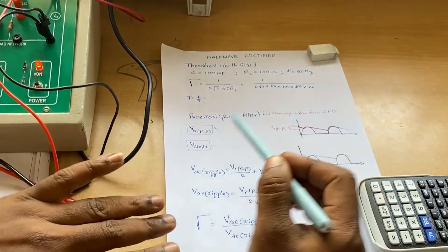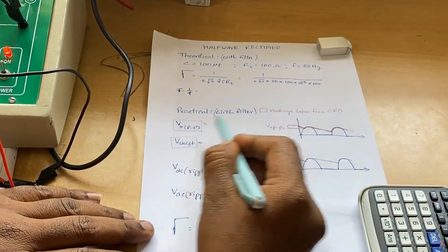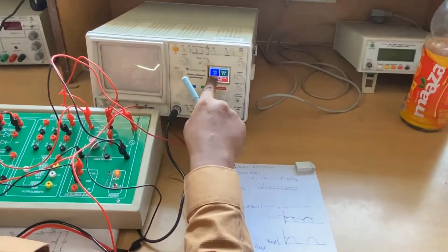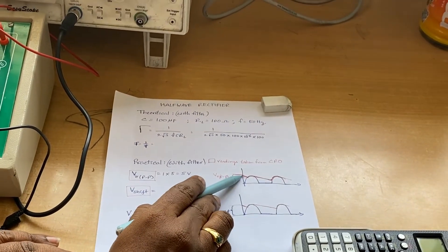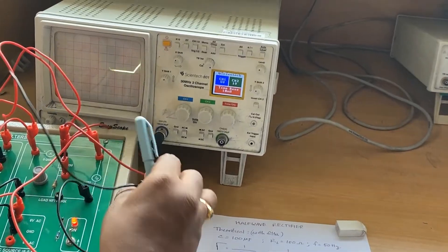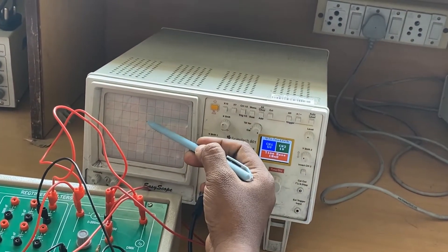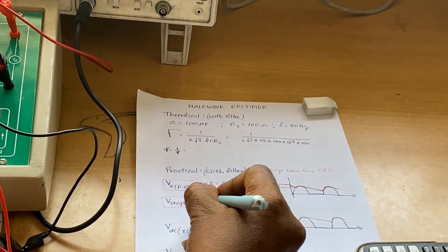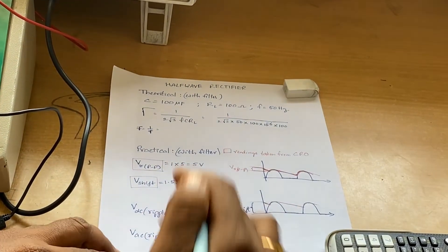Coming to the practical calculations: the peak-to-peak ripple voltage — from the top to the bottom of the ripple — is approximately 1 division, so 1 × 5 = 5 volts peak-to-peak. For the V-shift value, consider from the X-axis to the midpoint, which is 1.5 divisions, so 1.5 × 5 = 7.5 volts.